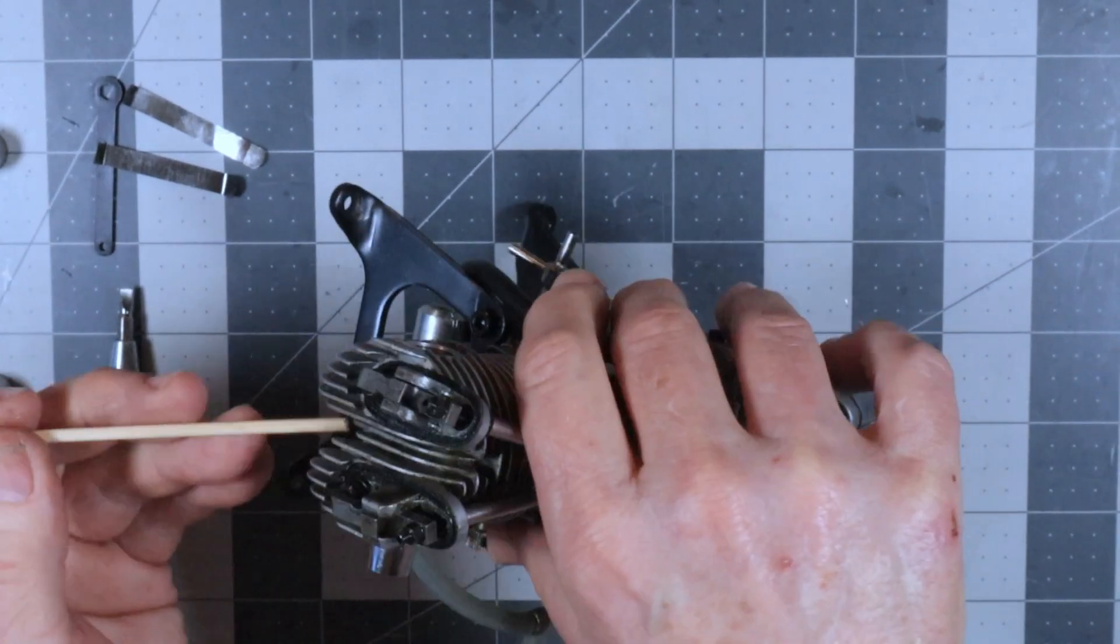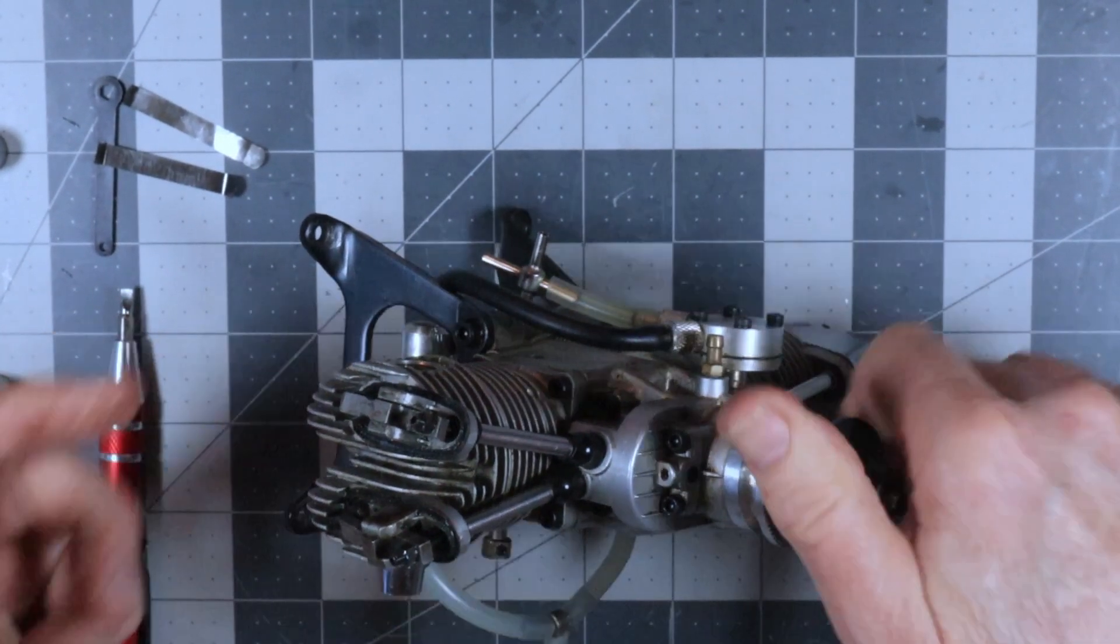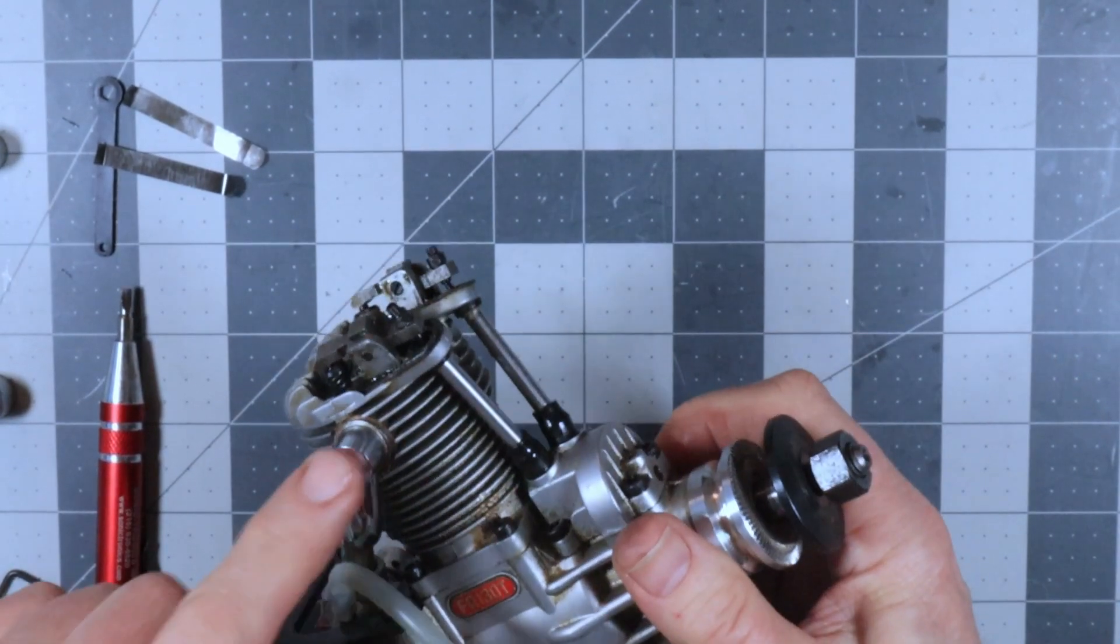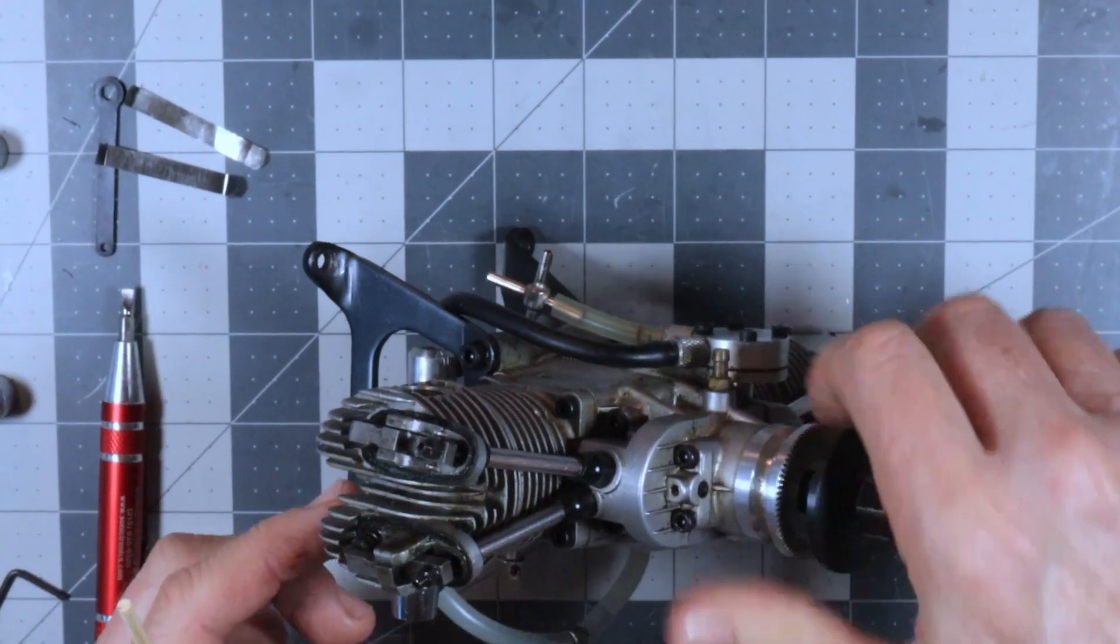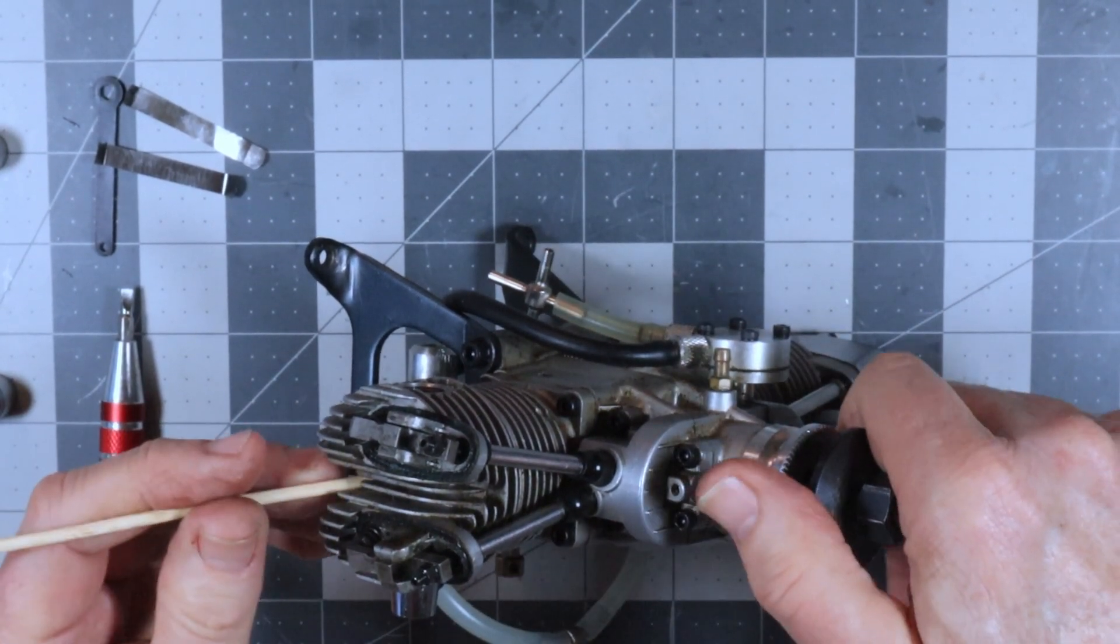I've got a bamboo stick here and I've got my glow plug out. So I'm going to find top dead center after the intake valve goes down and works. Let's see here, this is the intake valve on this engine.